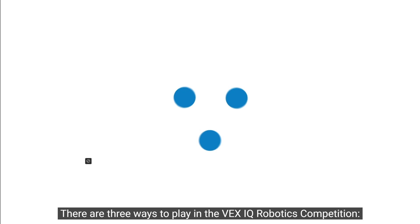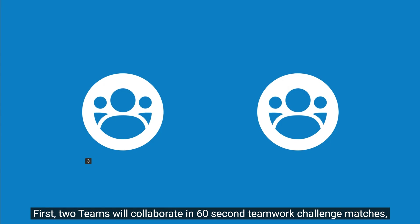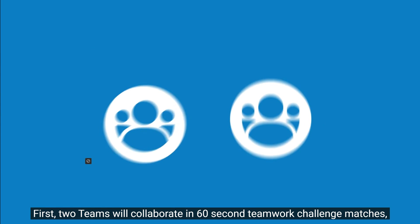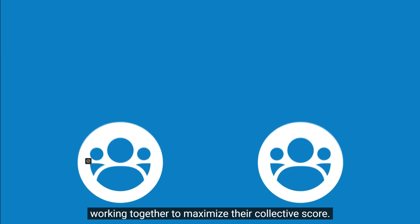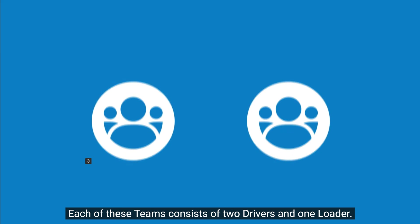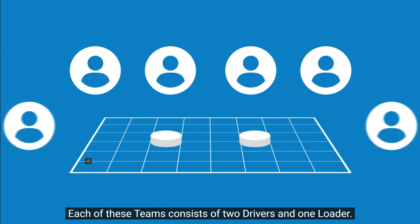There are three ways to play in the VEX IQ Robotics Competition. First, two teams will collaborate in 60 second teamwork challenge matches, working together to maximize their collective score. Each of these teams consists of two drivers and one loader.